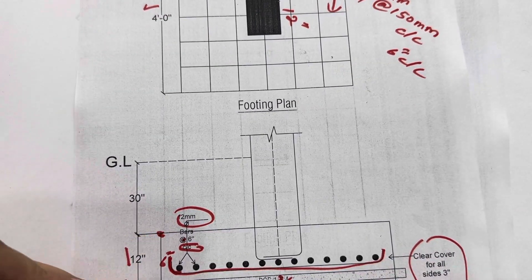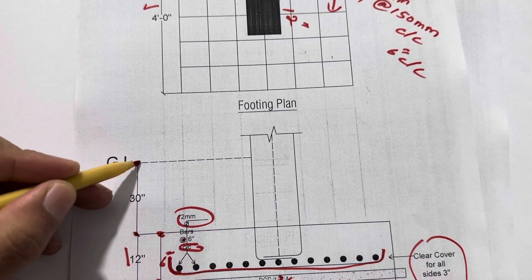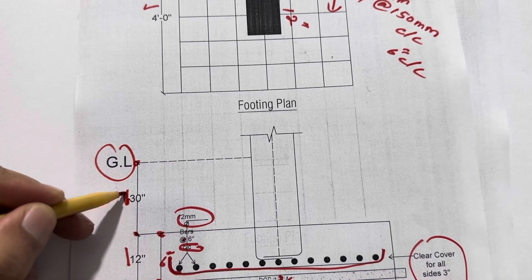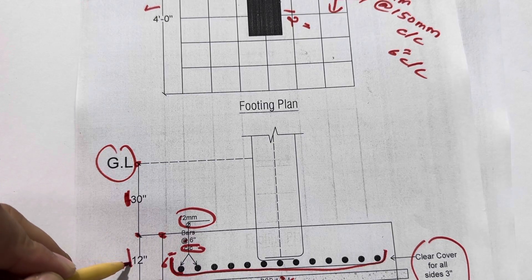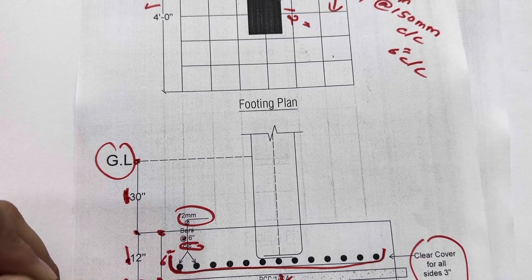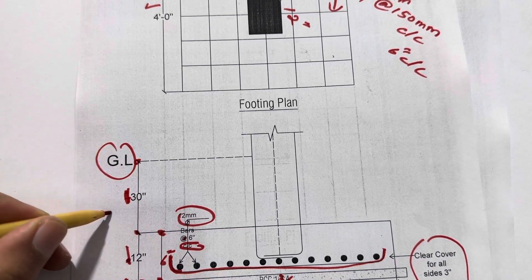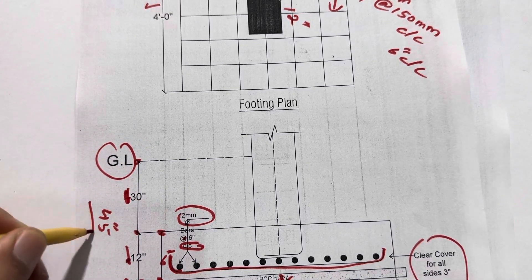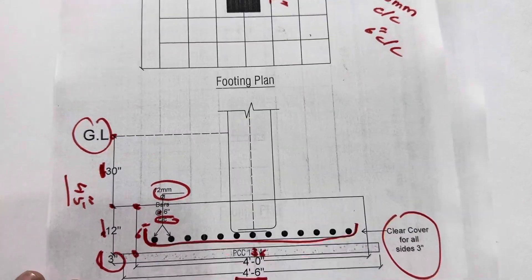After the bed depth, you can see this is the bed depth. So from to the ground level, the depth is 30 inches. So 30 inches plus 12 inches, it becomes 42 inches plus 3 inches. So this is 45 inches total depth of the footing.